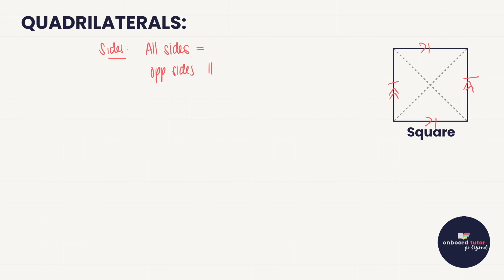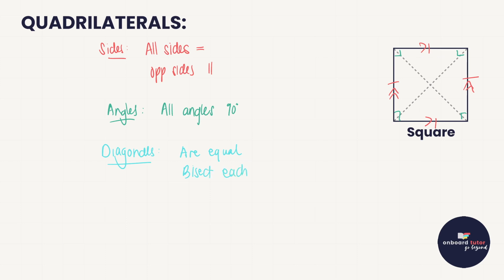What do we know about the angles? This is very much like the rectangle in that all angles are 90 degrees — the sides meet each other at perpendicular angles. Then we look at the diagonals, and this is really where the square is quite remarkable because it's got so much helpful information. First up, the diagonals are equal. They bisect each other, but they bisect at 90-degree angles — so each of these angles in the middle is a 90-degree angle.